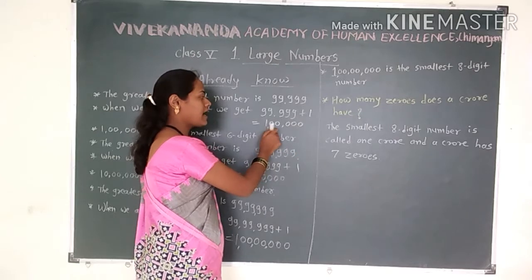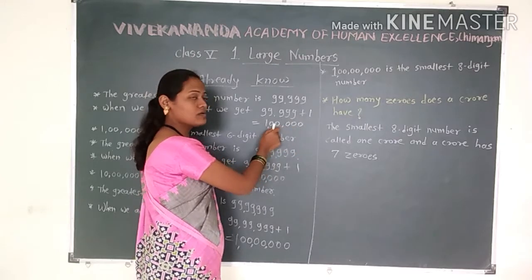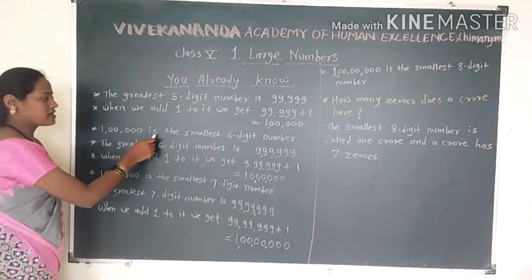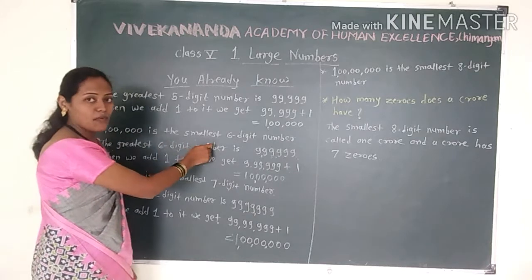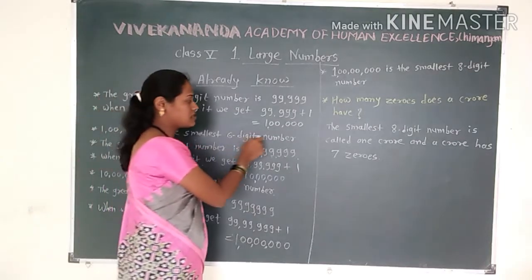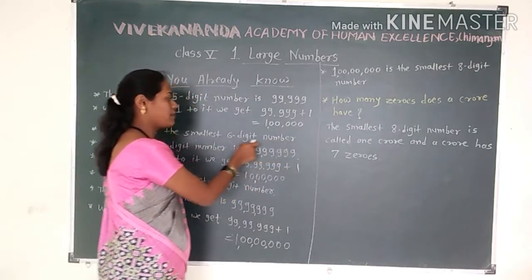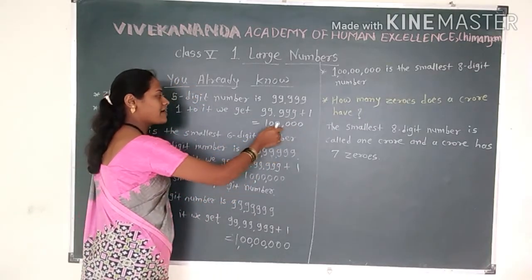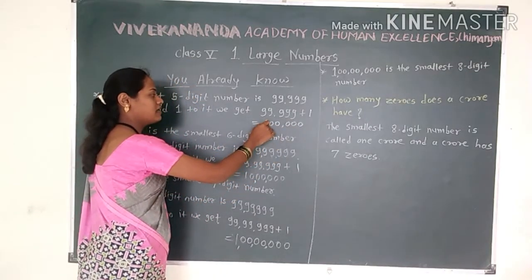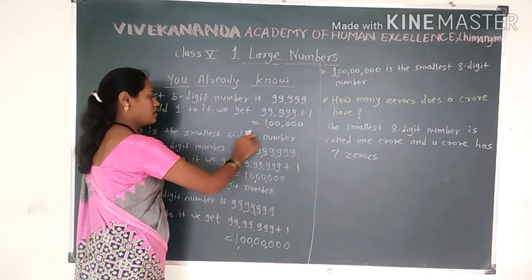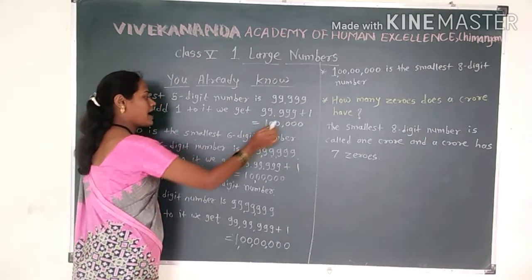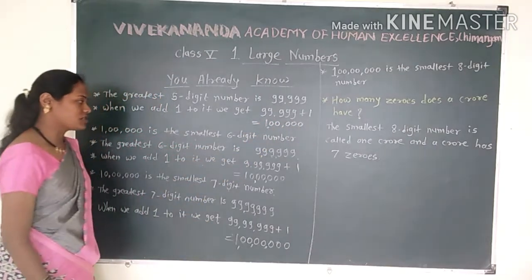1 lakh has 5 zeros, and 1 lakh is the smallest 6-digit number — because there are 5 zeros and a 1, making 6 digits total.